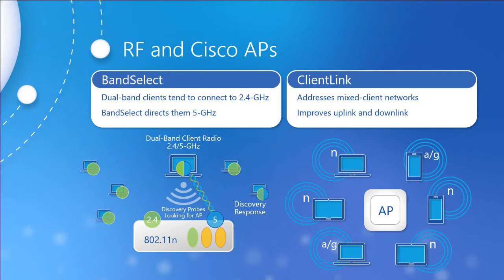Client Link is essentially Cisco's version of beamforming — directing the signal toward individual clients rather than casting a wide net. Unlike traditional beamforming, Client Link does not rely on feedback to make adjustments; it can do it without client feedback. All current access points support at least Client Link version 2.0, with newer models supporting version 3.0, which adds 802.11ac support and enhancements for newer laptops by leveraging multiple antennas to focus transmissions even more.